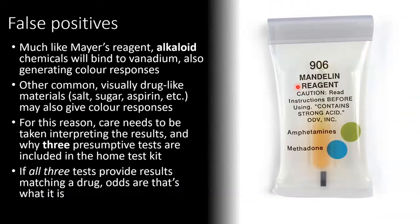Like Mayer's reagent, any alkaloid chemicals are going to bind to vanadium too, since the definition of an alkaloid is simply a small molecule that contains a nitrogen atom — these will also generate colour responses. Worse than that, other common visually drug-like materials such as white powders — salt, sugar, aspirin — may also give a colour response with Mandolin reagent. For this reason, care needs to be taken when interpreting the results, which is why there are three presumptive tests included in the home drug testing kit. If all three separate tests provide results that match a drug, the odds are good that's what it is; if only one matches, it's more than likely a false positive.